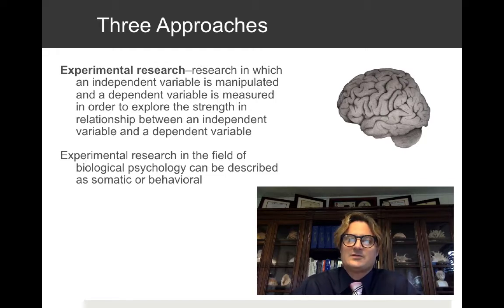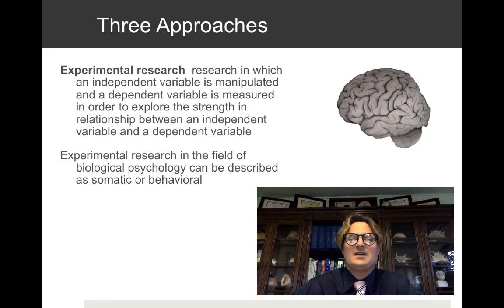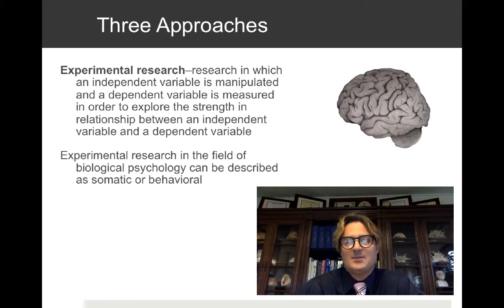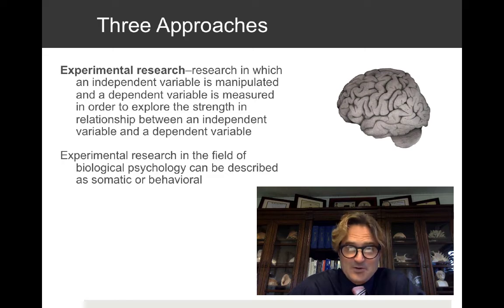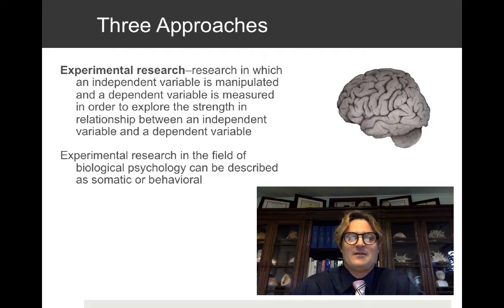We have three approaches to studying biological psychology. Experimental research is research in which an independent variable is manipulated and a dependent variable is measured to explore the relationship between them. In biological psychology, experimental research can be described as somatic or behavioral — psychology is really about measuring dependent variables as you manipulate independent variables.